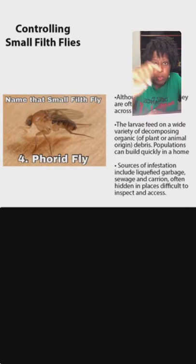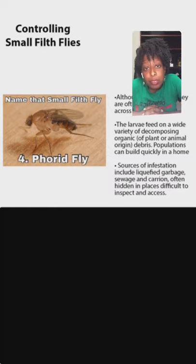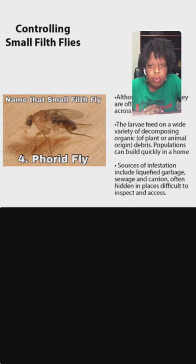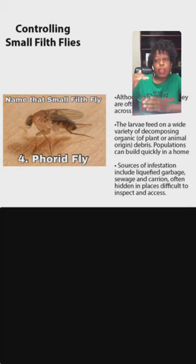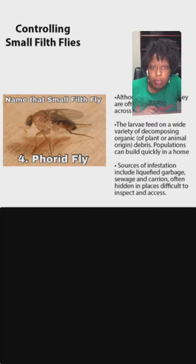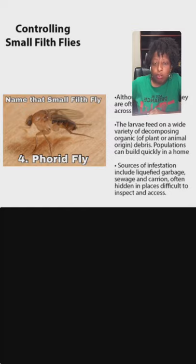The last fly we're going to talk about is the phorid fly — also called scuttle flies or humpback flies. These are the most annoying small flies you can deal with. They're usually the first ones to show up when something has recently died, and they will show up in large numbers. They're a huge problem at mausoleums and will actually burrow six feet down to get inside coffins to lay their eggs on decaying bodies.